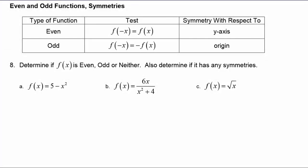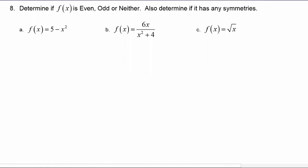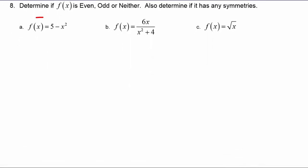So let's give our example problems a try. We've got example a here: f of x is equal to five minus x squared. So we do the test. F of negative x is equal to five minus negative x quantity squared.